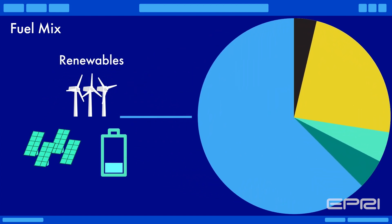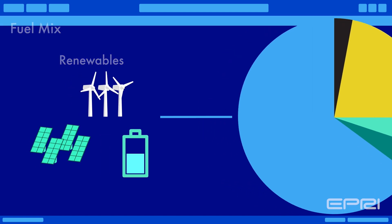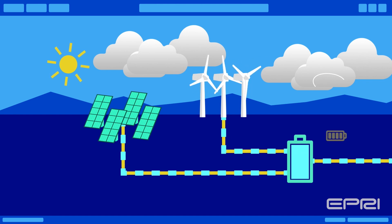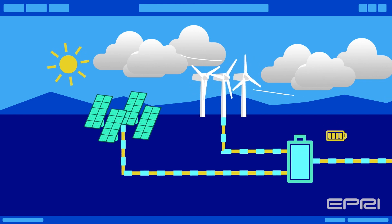Wind, solar, and battery storage are increasing but don't fit the mould of traditional generators. Wind and solar PV are inherently weather dependent, and batteries are energy limited.